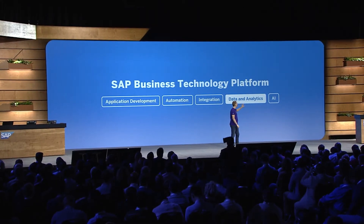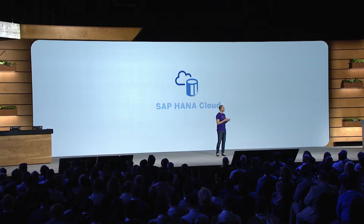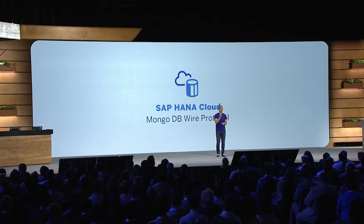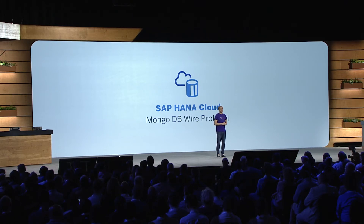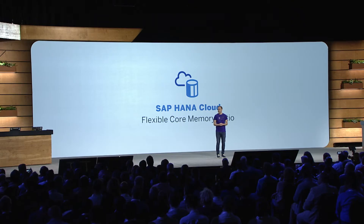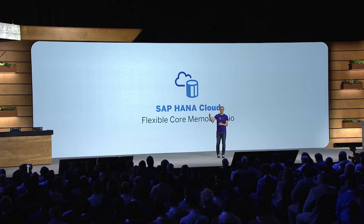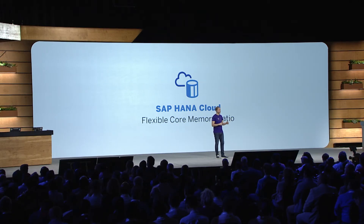Let us have a look at the next area of BTP: data and analytics. I am excited to announce new capabilities that will further help you implement your data-driven strategy. Starting with HANA Cloud, our database-as-a-service offering: SAP HANA Cloud now supports MongoDB's wire protocol, so HANA Cloud can now be used as a drop-in replacement for MongoDB. We are also announcing for end of the year a flexible core-to-memory ratio, which can reduce your total cost of ownership when you need more CPU capacity but not more memory, or vice versa.